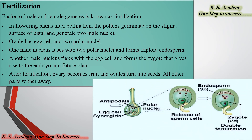Looking at the diagram, we can see how reproduction takes place in the female part of the flower. From the top of the pistil, the pollen grain is transferred and two male nuclei enter into the ovule. One nucleus fuses with the egg cell — this is called the egg cell fusion — and the other fuses with the two polar nuclei to form the triploid endosperm. These two fuse together to form a zygote. This is why it is called double fertilization.